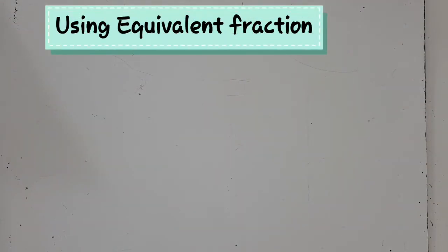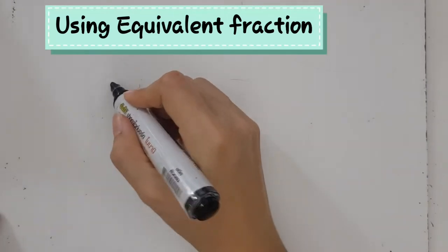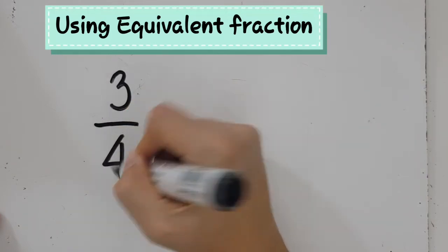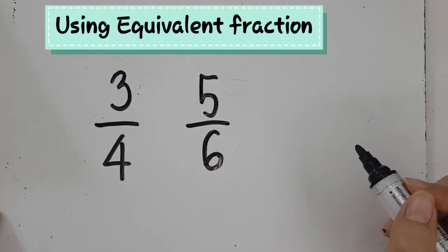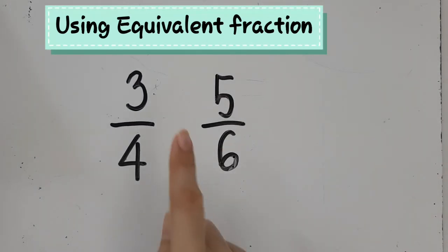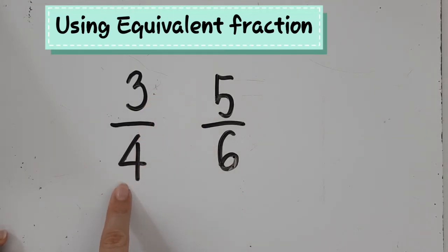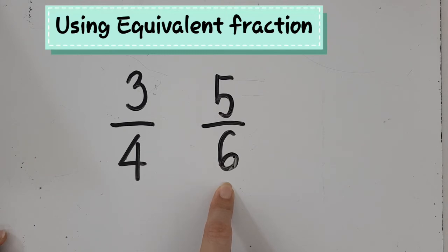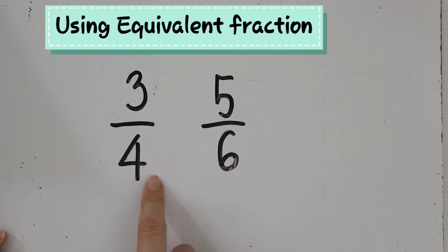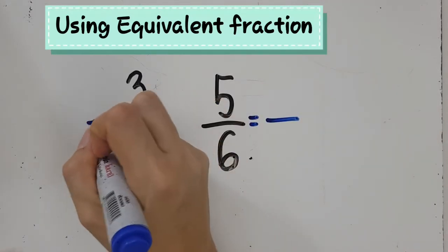The last method to compare fractions is using equivalent fractions to find the same denominator. For example, three-fourths and five-sixths. We want to compare these two fractions. They do not have the same denominator, they do not have the same numerator. Comparing to half — this is more than half, and this is also more than half. So I cannot use the first three methods, and they didn't give me a diagram either. I need to use equivalent fractions. I want to make them have the same denominator — which denominator should I choose?